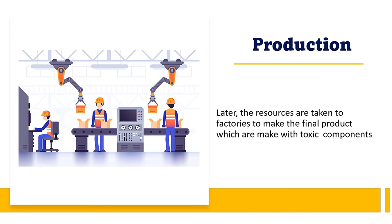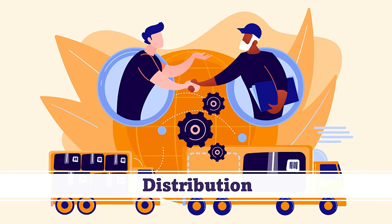The production process involves transforming a range of inputs into outputs required by the market. It involves two main sets of resources: transforming resources and transformed resources. Any product process involves a series of links in a production chain. The distribution system is a chain of businesses or intermediaries through which a good or service passes until it reaches the final buyer or end consumer.